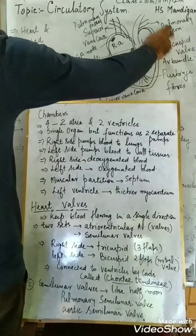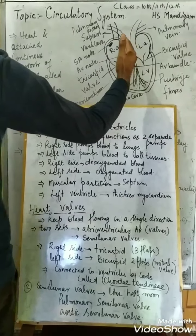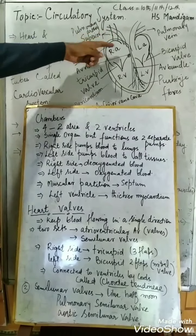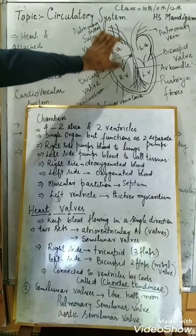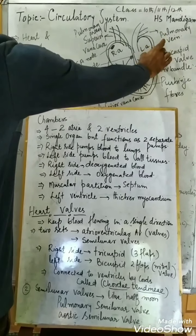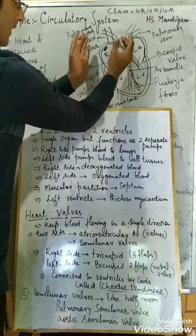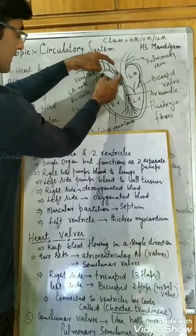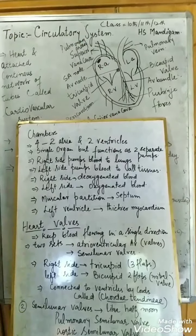The lower two chambers are the right ventricle and the left ventricle. The heart is a single organ but functions as two different pumps: the right side pumps deoxygenated blood to the lungs, while the left side pumps oxygenated blood to all the tissues of the body. The right side and left side are separated by a muscular partition called the septum.